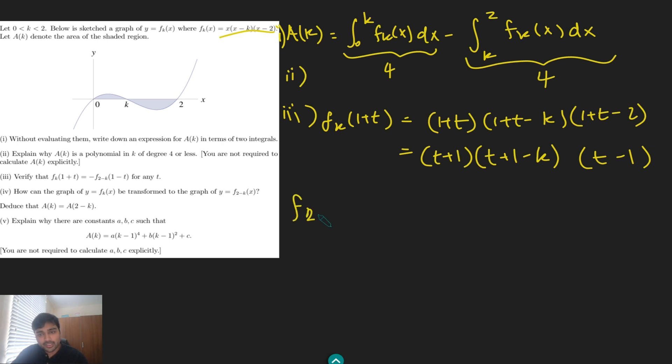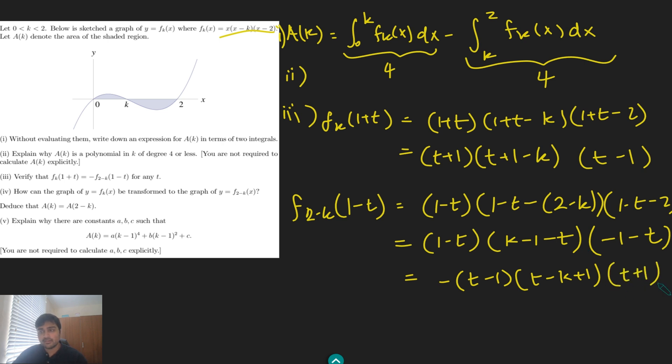And what about f(2-k)(1-t)? So this is going to be (1-t) times (1-t-(2-k)), which in this case is (2-k), and then (1-t-2). So if I simplify that as (1-t), 1 minus 2 is negative 1 plus k, so I've got (k-1-t), and then here I've got (-1-t). And now if I just factor out a minus 1 from each of these brackets, that gives me minus 1 cubed at the front, which is just minus 1. And then I've got (t-1)(t-k+1) and then (t+1), like so. And that is the same as that. And so therefore f(2-k)(1-t) is the negative of fk(1+t). Great.